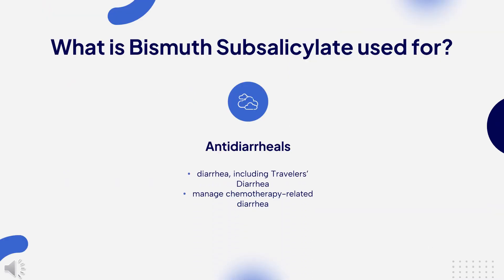What is bismuth used for? Bismuth subsalicylate is indicated to temporarily relieve diarrhea, traveler's diarrhea, and upset stomach due to overindulgence in food and drink, including heartburn, indigestion, nausea, gas, belching, and fullness.